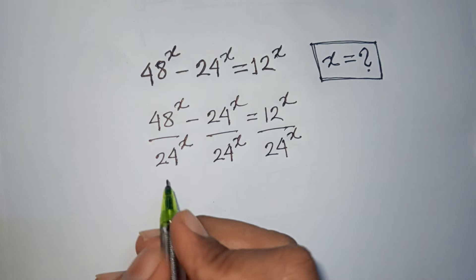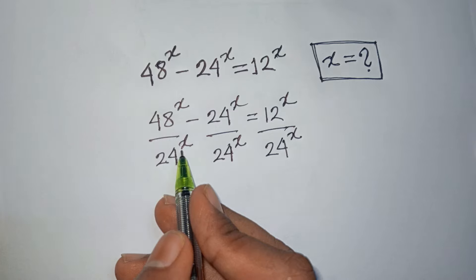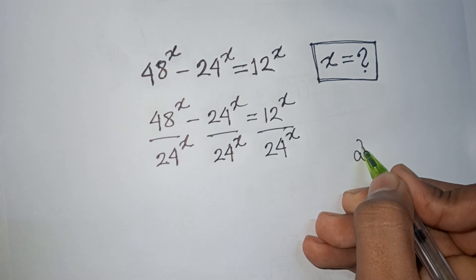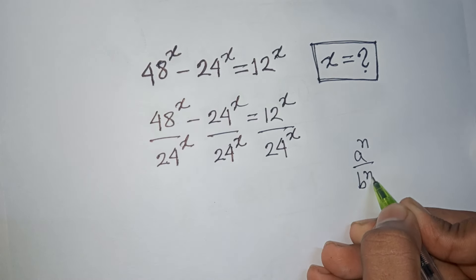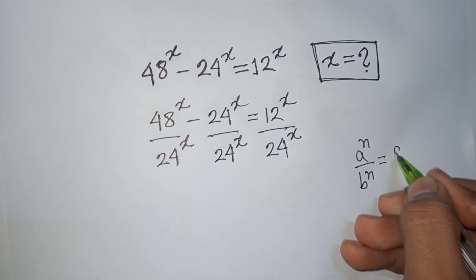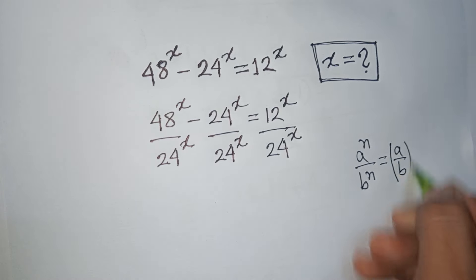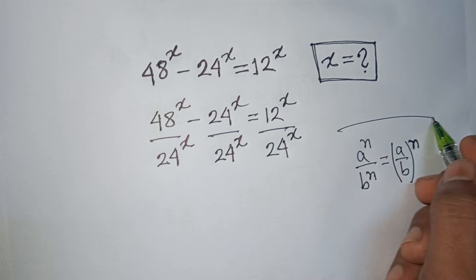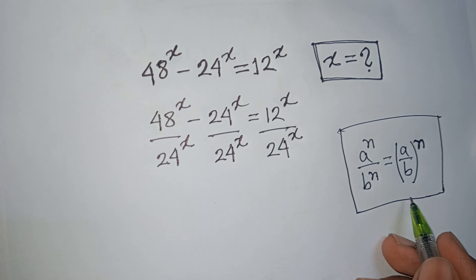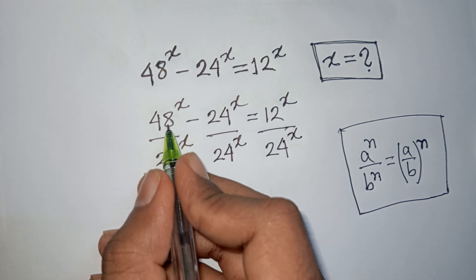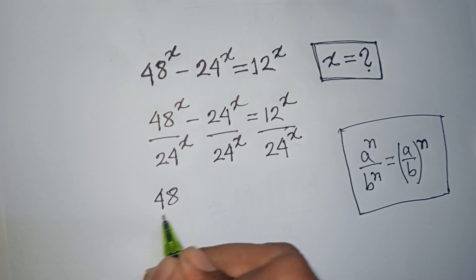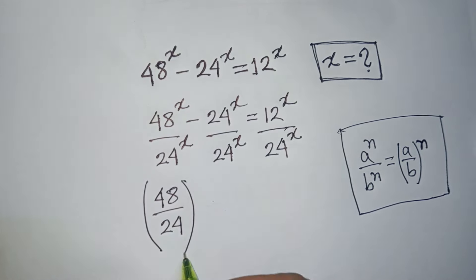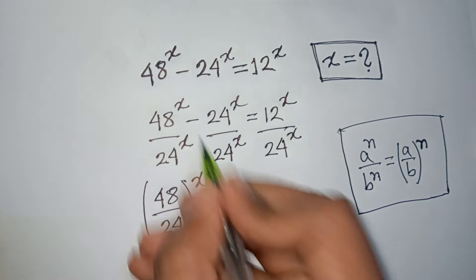Now, from here, we have the same power but different bases. According to the exponent rule: a^n over b^n is equal to (a/b)^n. Applying this rule, the first term becomes (48/24)^x.